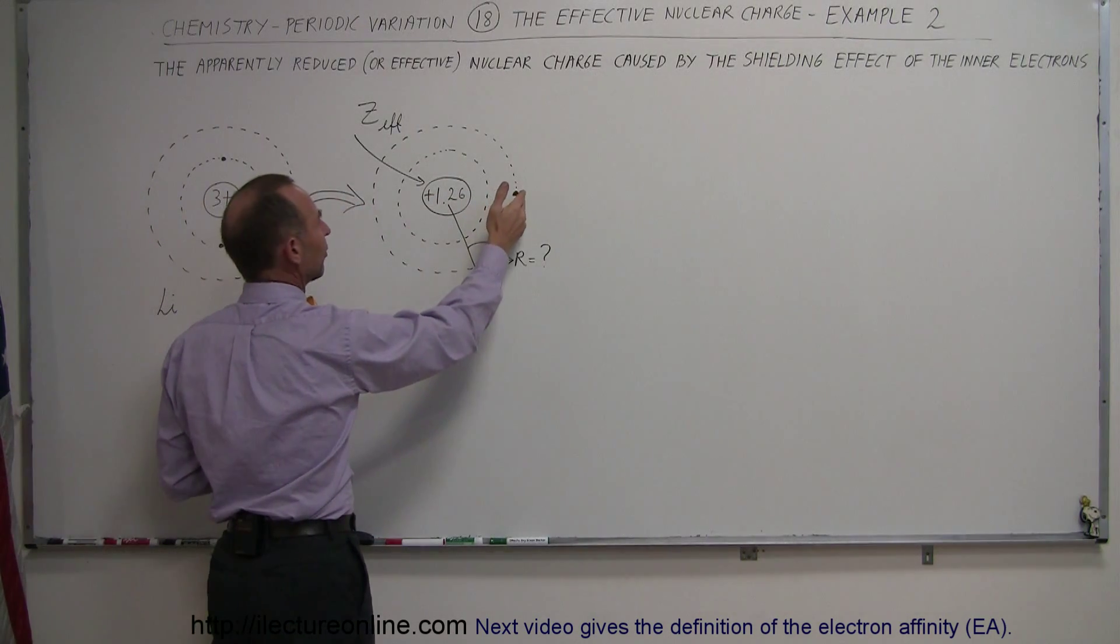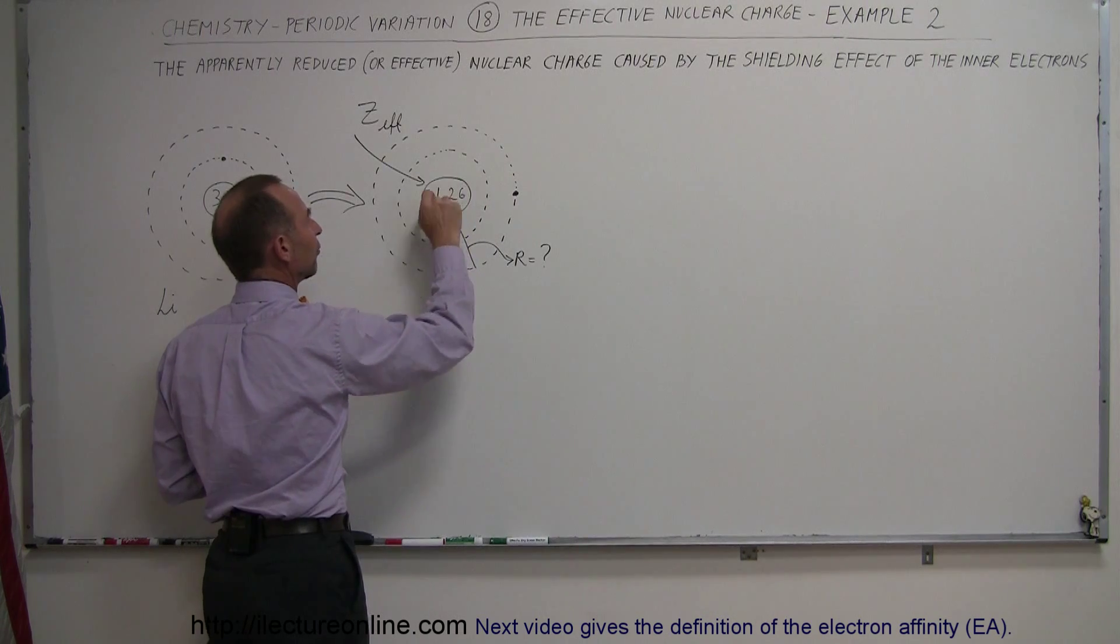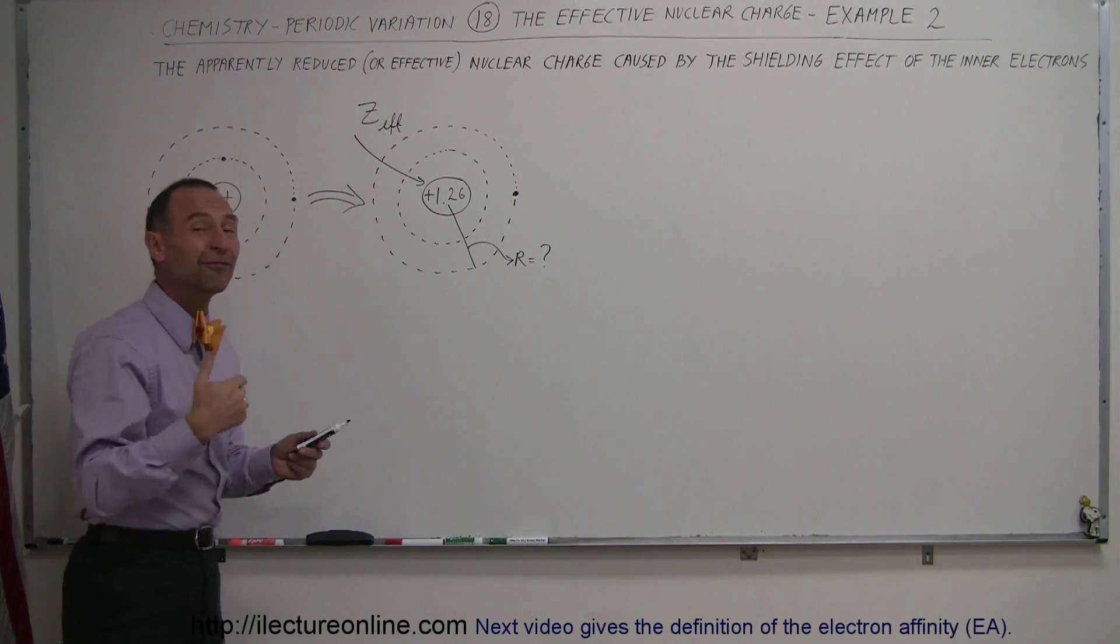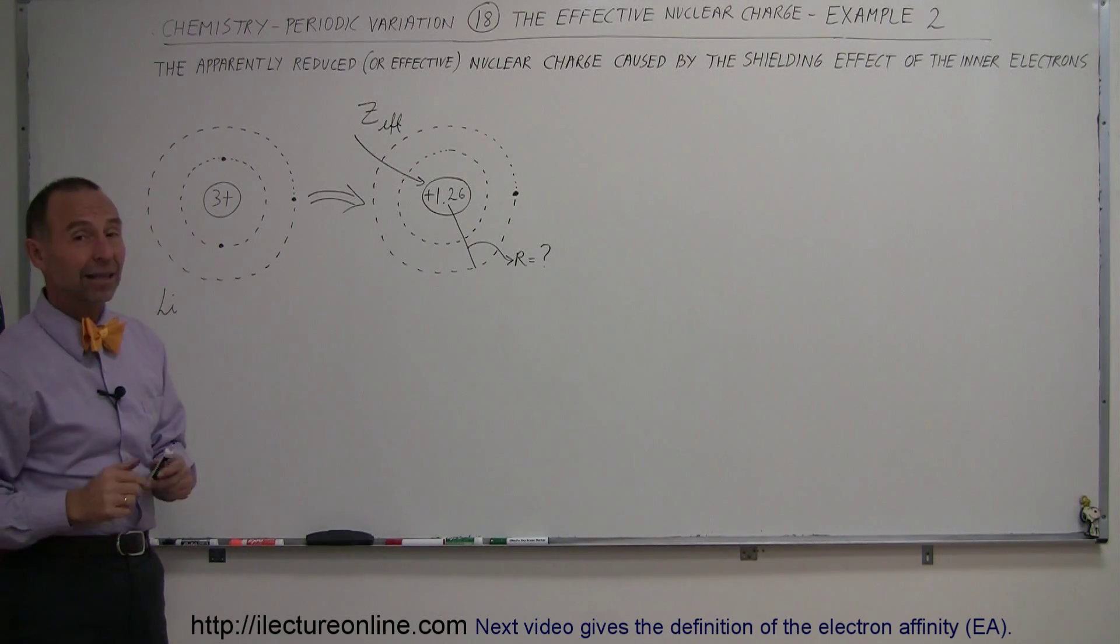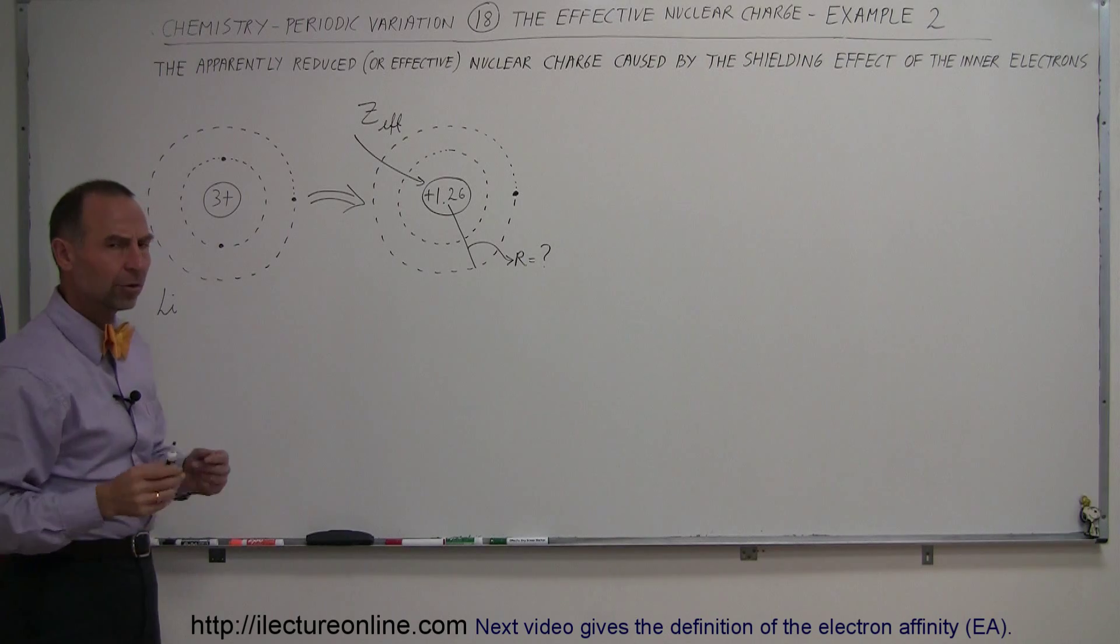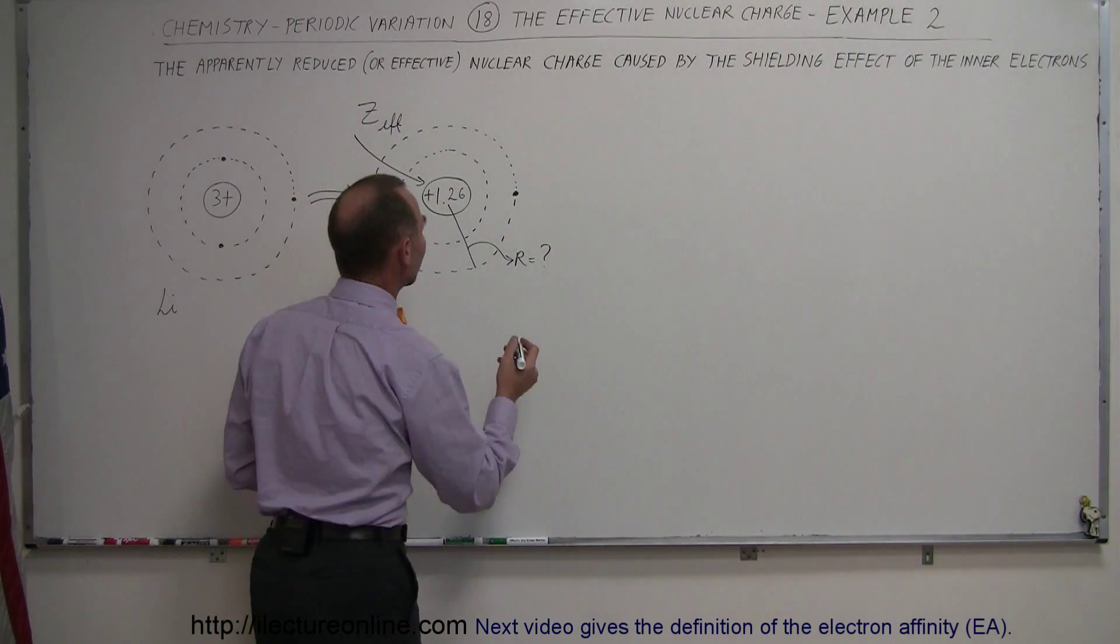Based upon that, we should be able to predict the radius of a lithium atom. If the outermost electron seems to feel only an attractive force due to an effective nuclear charge of 1.26, we should be able to figure out how big a lithium atom actually is. There's a balance of forces here.